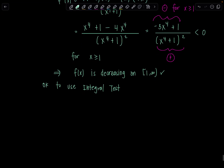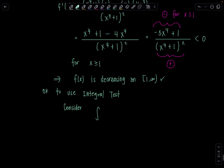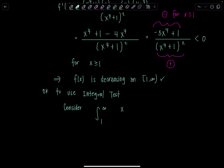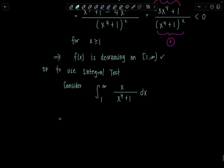When we use the integral test, we consider the improper integral that matches the index of summation, which goes from 1 to infinity. So we're going to integrate from 1 to infinity of x over x to the fourth plus 1 dx. We rewrite it first as a limit: as t goes to infinity, replace the upper limit with t. I'm going to rewrite x to the fourth as x squared squared, just to inspire you as to how to solve this integral.